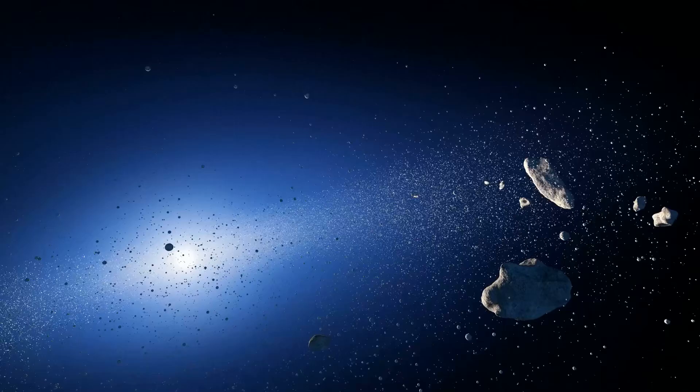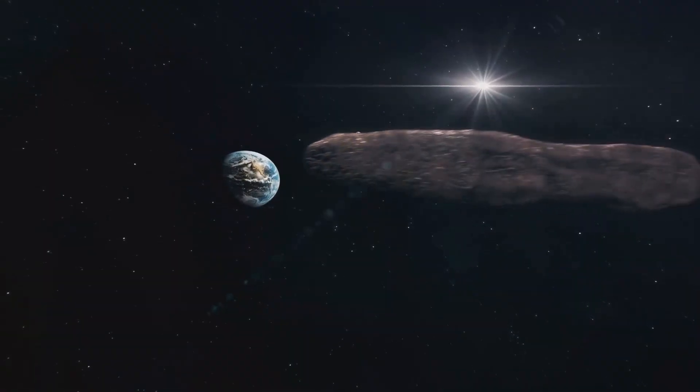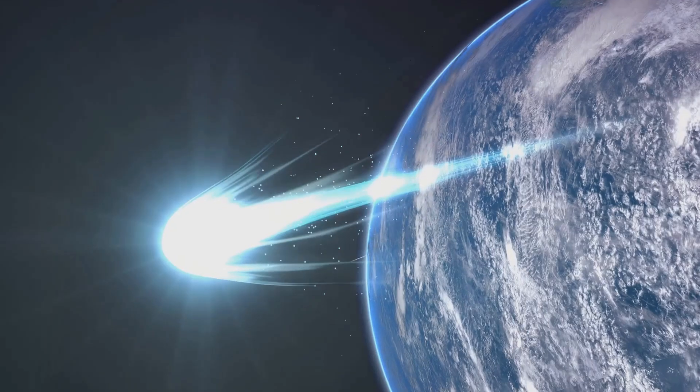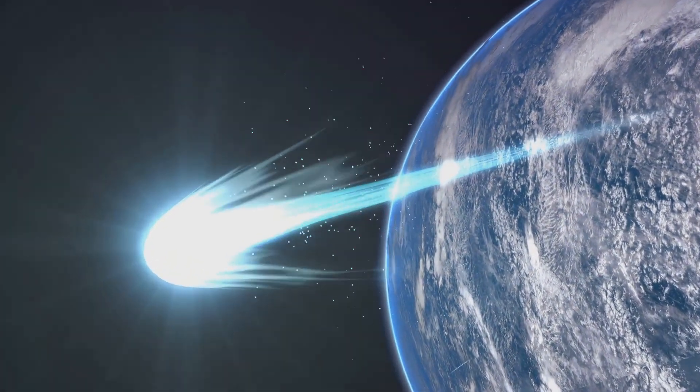As it swings around our Sun in its elongated orbit, it disrupts the Oort Cloud, a region of our solar system filled with billions of icy objects. This disturbance could potentially send comets hurtling towards Earth, causing catastrophic events.